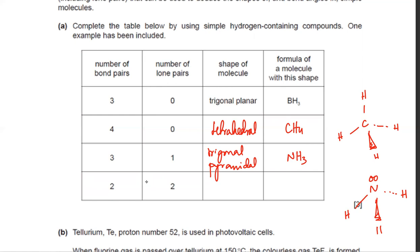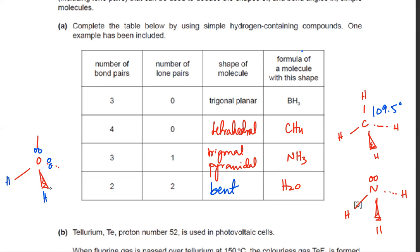Two lone pairs and two bonds — water is the example. It can be thought of as derived from a tetrahedral shape: oxygen makes two bonds with hydrogen and has lone pairs on the other two sides. Since nothing is attached on those sides, the shape is V-shaped or bent — non-linear. The angle is 104.5 degrees because two lone pairs cause greater repulsion, squeezing the angle below 109.5.